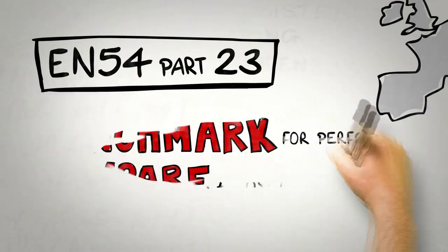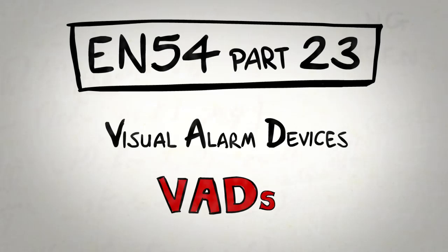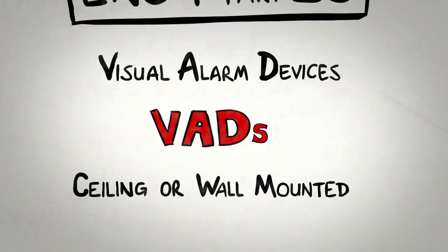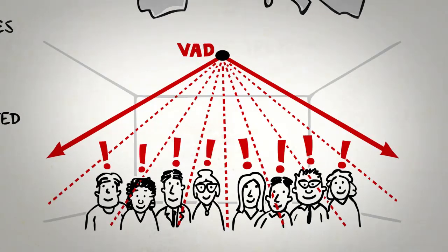The EN54 Part 23 standard for visual alarm devices, known as VADs, defines two main categories, ceiling or wall-mounted. Both need to fill a room space with a minimum light level to alert all occupants successfully.